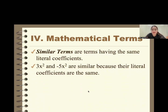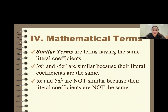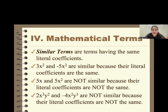Similar terms are terms having the same literal coefficient. For example, 3x squared and negative 5x squared have the same exponent and the same variable, so they are similar. However, 5x and 5x squared are not similar. Also, 2x cubed y squared and negative 4x squared y cubed are not similar since the exponents of x and y are not the same.